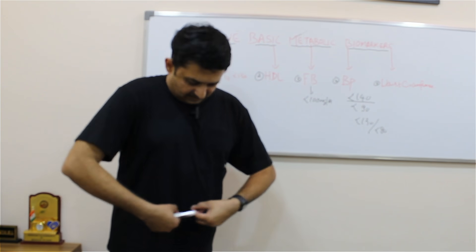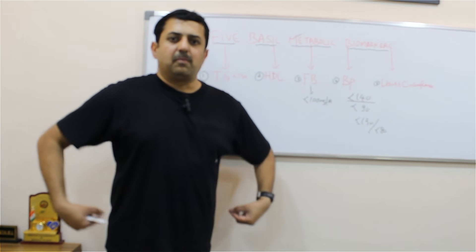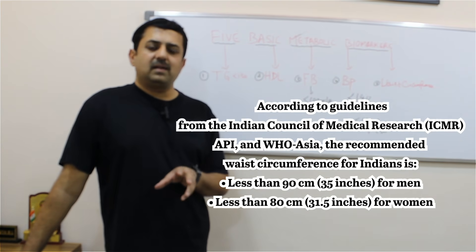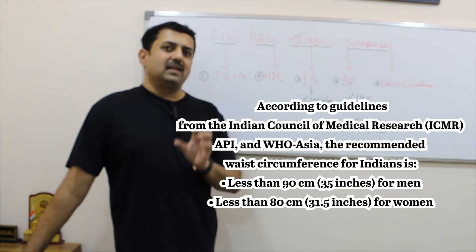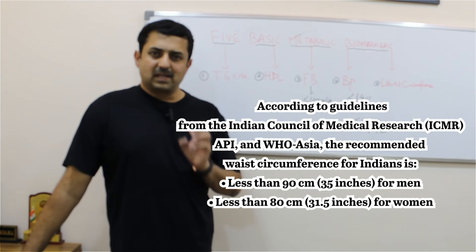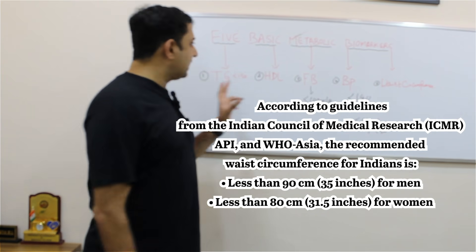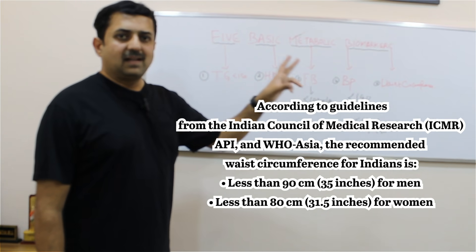Measure your waist circumference at the level of the umbilicus. There are various references for Indians, keep it simple: for men it should be less than 90 centimeters, for women it should be less than 80 centimeters.